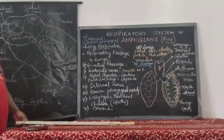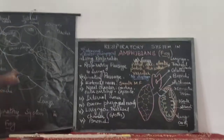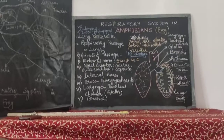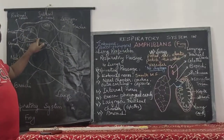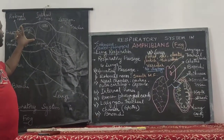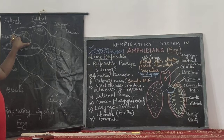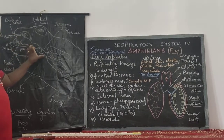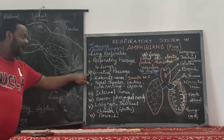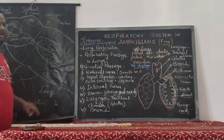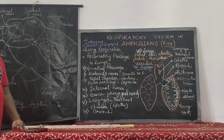The respiratory system in the case of amphibians — the part that starts from the external nase till the internal nase — is called the nasal passage. The second part we are going to understand under respiratory passage is the respiratory tract.